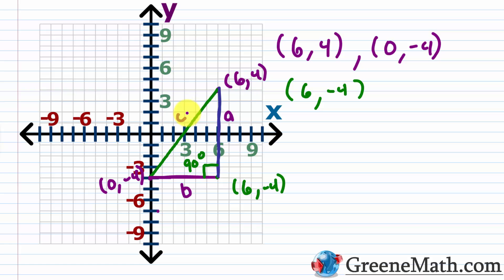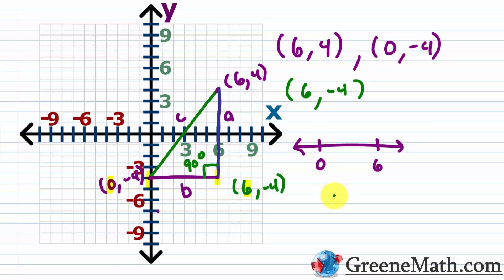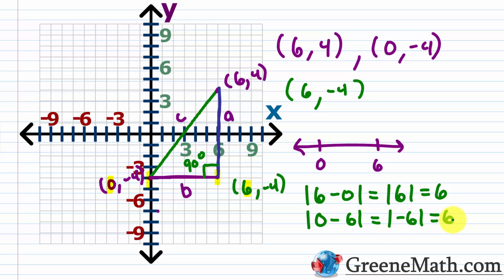It's easy to find the lengths of the legs. For B, the horizontal leg, we find the distance by subtracting x-values. Think of this as a horizontal number line: the absolute value of 6 minus 0 is 6, or the absolute value of 0 minus 6 is also 6. So leg B equals 6.